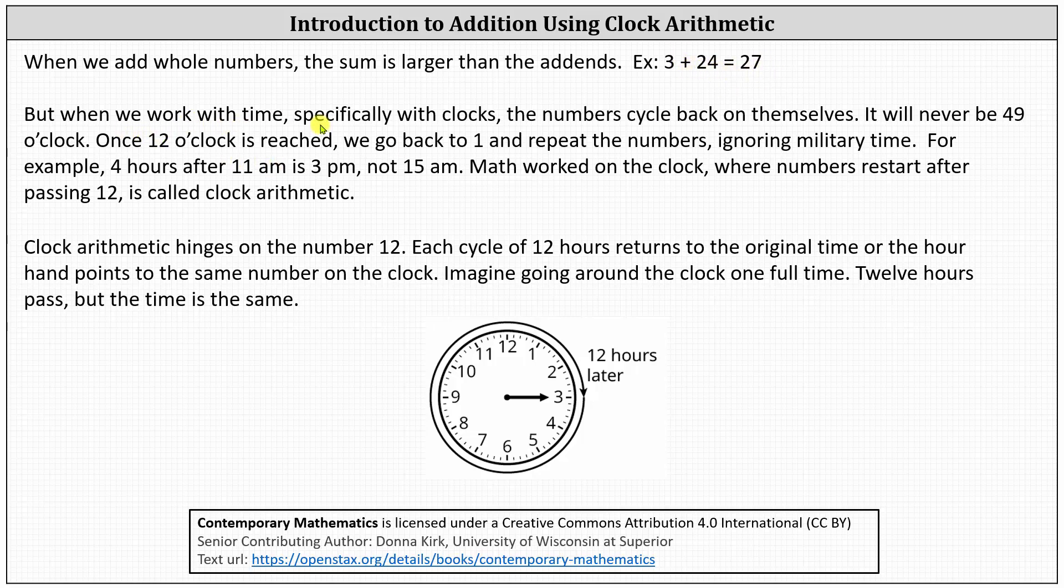But when we work with time, specifically with clocks, the numbers cycle back on themselves. It will never be 49 o'clock. Once 12 o'clock is reached, we go back to 1 and repeat the numbers, ignoring military time.